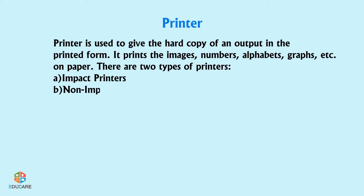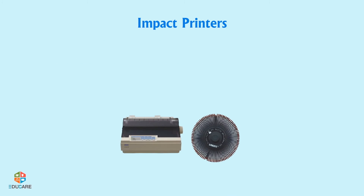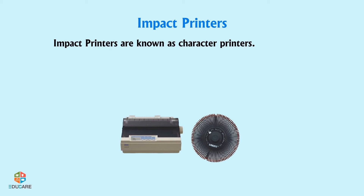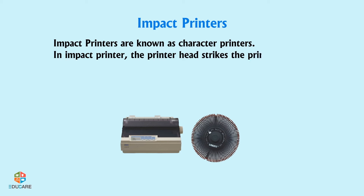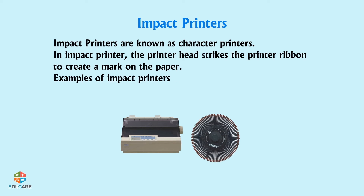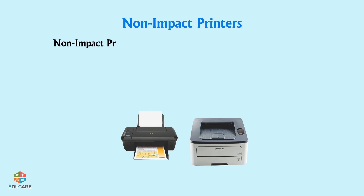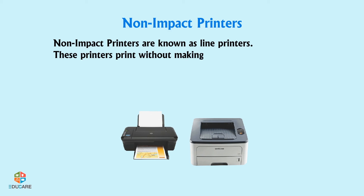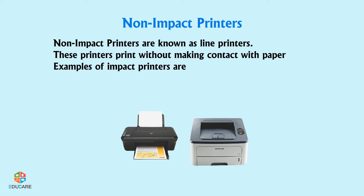Impact printers are known as character printers. The printer head strikes the printer ribbon to create a mark on the paper. Examples include dot matrix printers and daisy printers. Non-impact printers, also known as line printers, print without making contact with the paper. Examples include inkjet printers and laser jet printers.